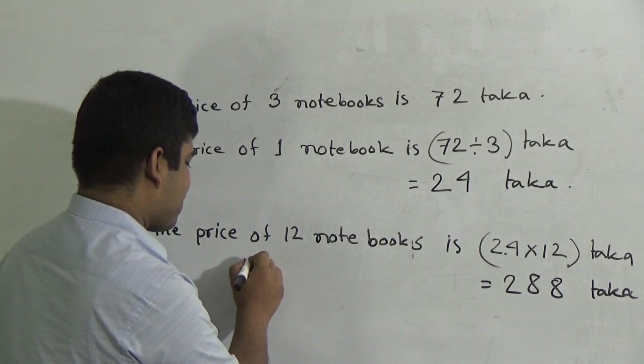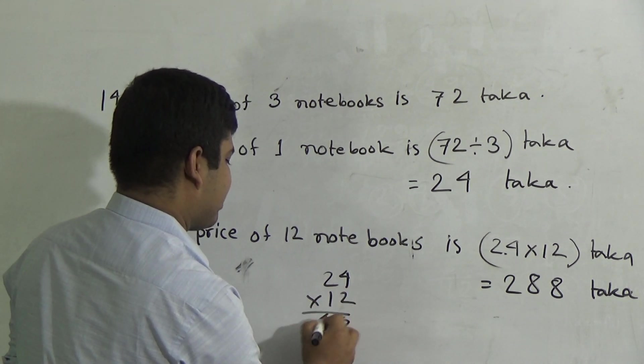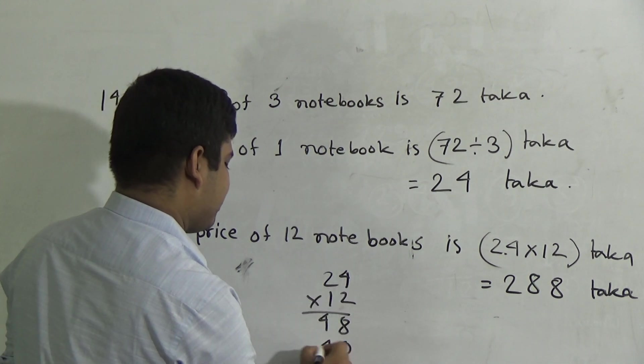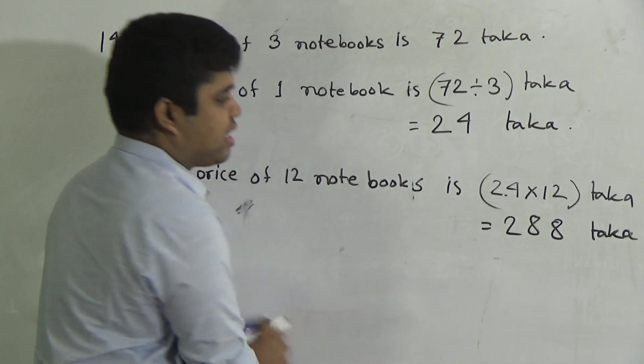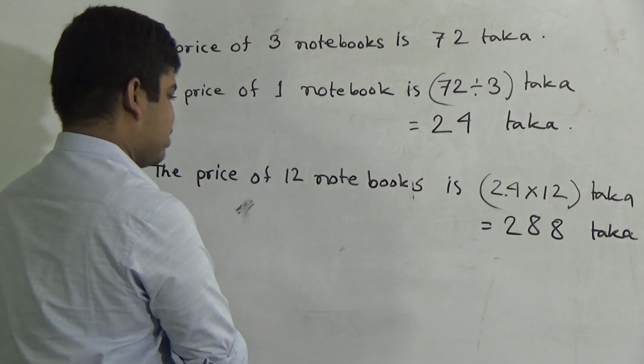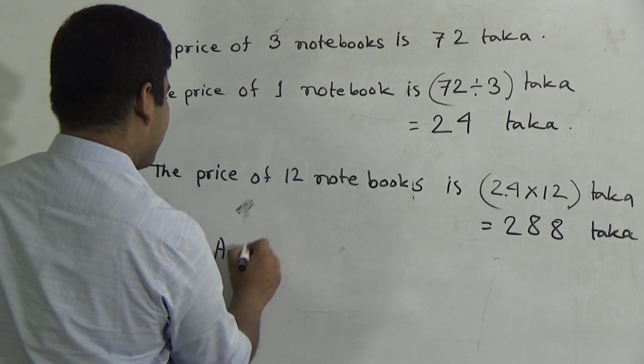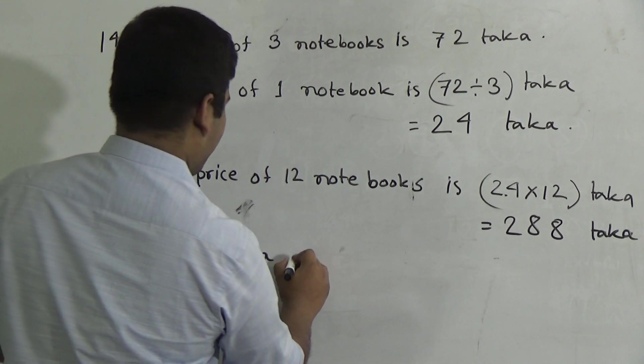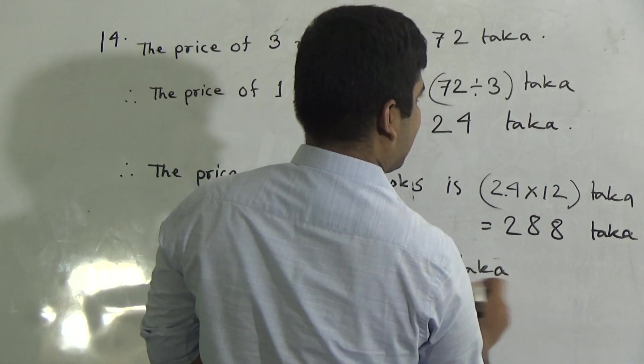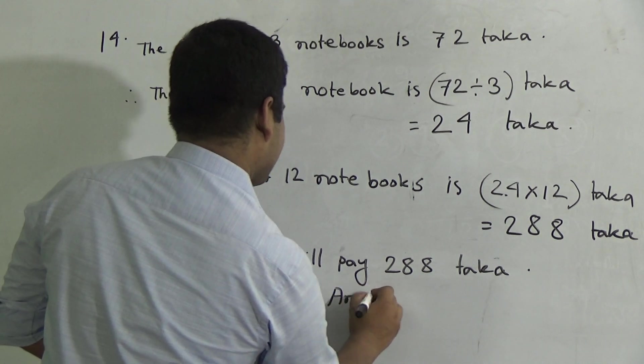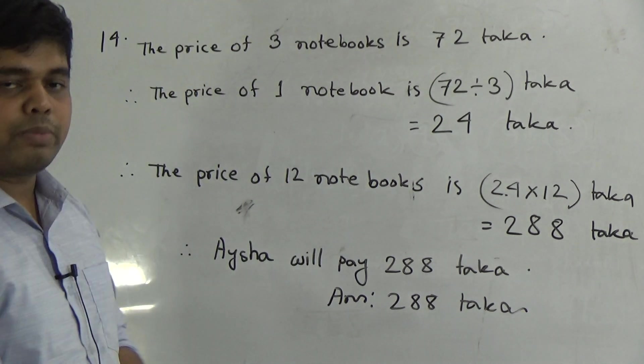My dear students, now you can also write here 24 multiply 12. 4 twos are 8, 2 twos are 4. Next 0, 4 ones are 4, 2 ones are 2. Then 8, 8 and 2. I hope you have understood. So this is the answer of this question as our solution is done. So here I write therefore, she will pay, she that means Aisha will pay 288 taka. Now write answer 288 taka. I hope you have understood. This is the solution of question number 14.